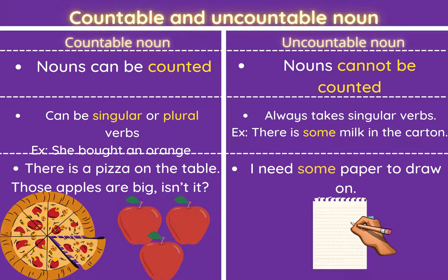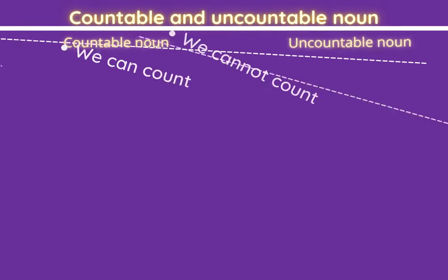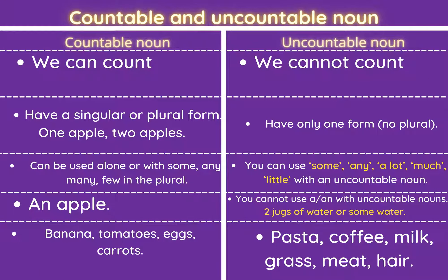Countable nouns can take singular or plural verbs. Uncountable nouns always take singular verbs. So you should say: there is some milk in the carton; I need some paper to draw on. For countable: there is a pizza on the table. We should use some, any, a lot, much, or little with an uncountable noun — for example, I need two jugs of water, or I need some water. Whereas with countable nouns, I should say: I need two apples, I need four eggs, and so on.